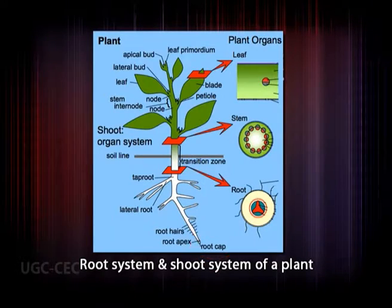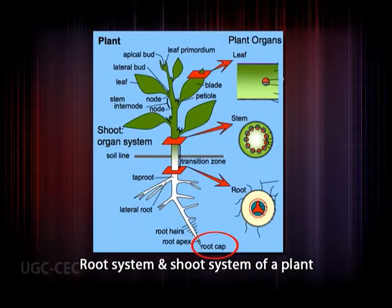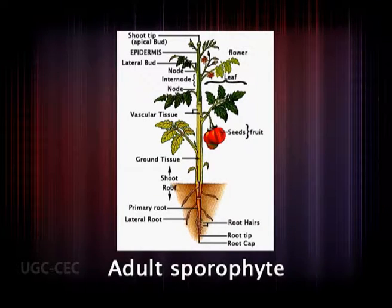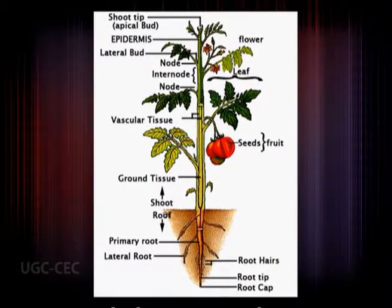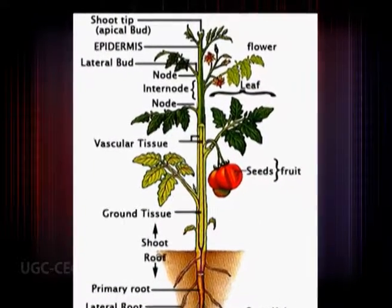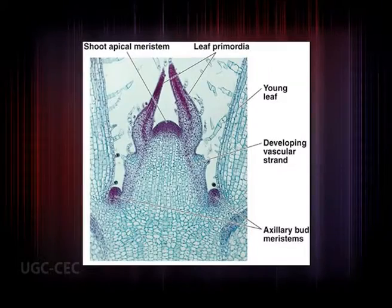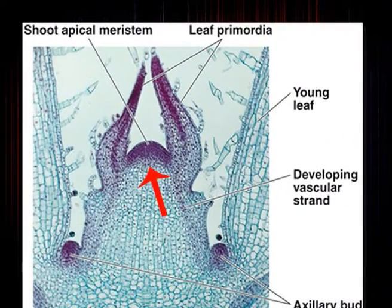Roots have a simpler pattern of organization and development than stems. Their growth is governed by an apical meristem which is sub-apical rather than truly apical, being covered by a root cap. The root cap is derived from the root apical meristem along with other root tissues. The shoot system consists of stems and leaves. The stem serves as a framework for positioning the leaves — the principal site of photosynthesis. Flowers, other reproductive organs, fruits, and seeds are also formed on the shoot.